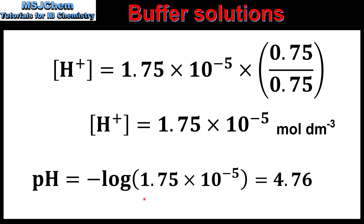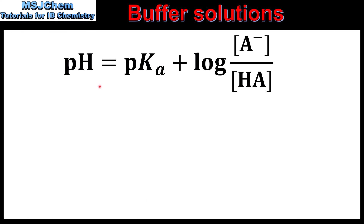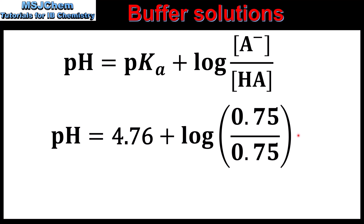When the concentrations of the weak acid and salt are equal, the pH equals the pKa. Using the Henderson-Hasselbalch equation: pH = pKa + log([conjugate base]/[weak acid]) = pKa + log(0.75/0.75) = pKa + log(1) = pKa + 0 = 4.76. So if the concentration of the conjugate base and the weak acid are the same, the pH of the buffer equals the pKa of the weak acid.